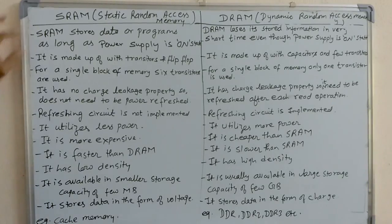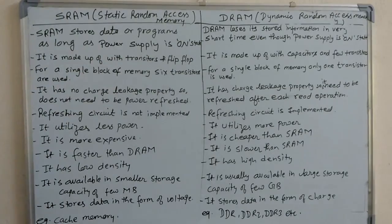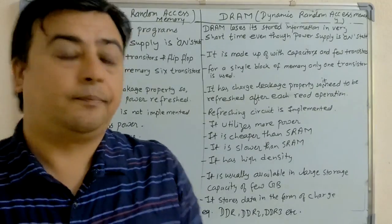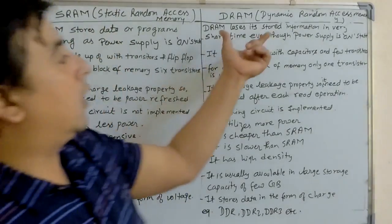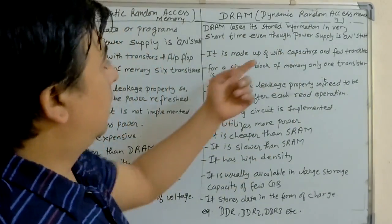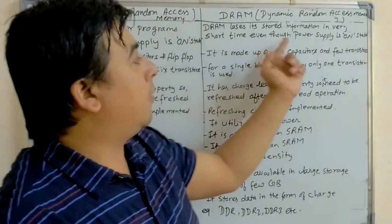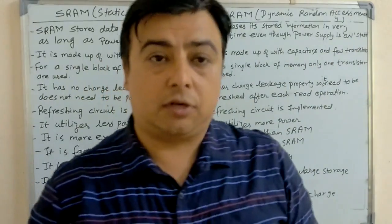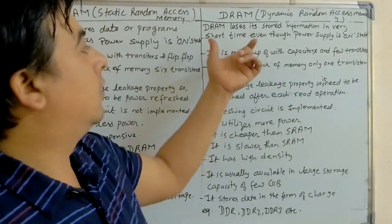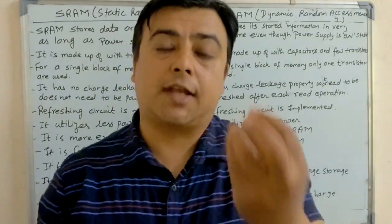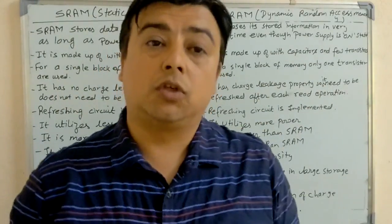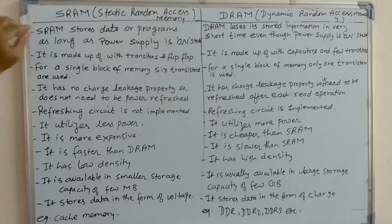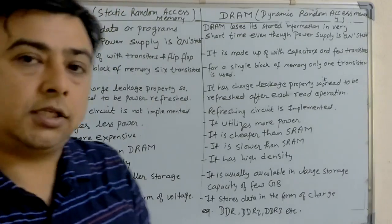The first difference is: SRAM stores data or programs as long as the power supply is on. But DRAM loses its stored information in a very short time even though the power supply is on. Both RAMs are volatile in nature, but DRAM stores data for only a short period of time.